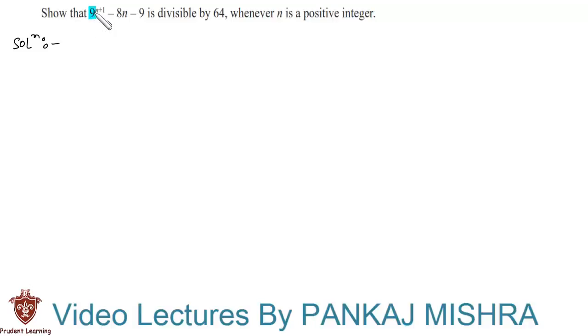Show that 9 raised to the power of n plus 1, minus 8n, minus 9 is divisible by 64, whenever n is a positive integer. To show that this quantity is divisible by 64, it is enough if we show that this quantity is equal to 64 times k, where k is a natural number.